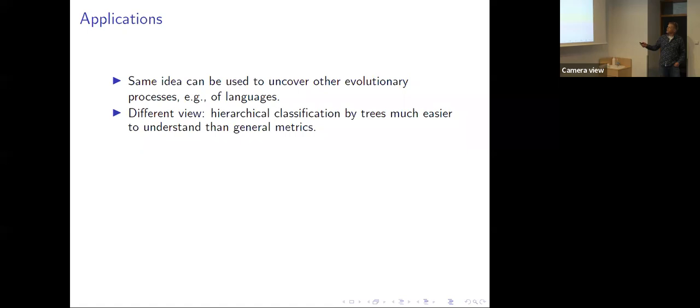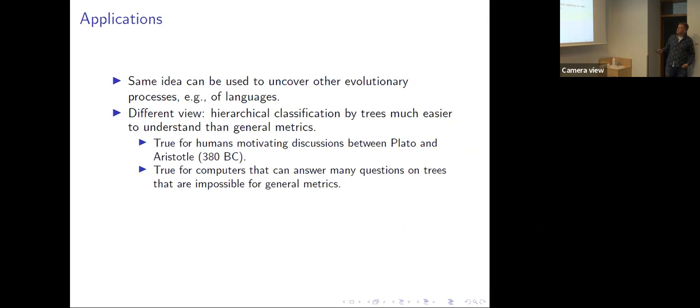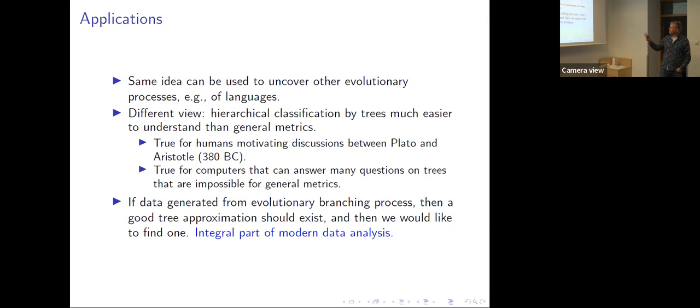This view, which is the original one by Aristotle and Plato, is that if you can classify things they're easier to understand. That was true for humans, but it's also true for computers — once we have a tree describing a metric or approximately describing it, we can answer almost any question efficiently. So if we have data we think is generated by an evolutionary process, there should be a tree approximating it quite well, and we want to find it. With general metrics you can't expect a good tree, but you may have reasons to believe one exists.